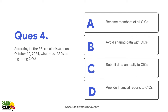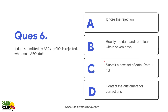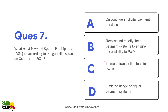According to the RBI Circular issued on 10th October 2024, what must ARCs — Asset Reconstruction Companies — do regarding CICs? They must become members of Credit Information Companies. How often should ARCs update information they collect and maintain? Fortnightly, meaning every 15 days, twice a month. If data submitted by ARCs to CICs is rejected, what must ARCs do? They must rectify the data and re-upload within seven days.